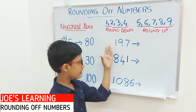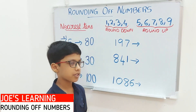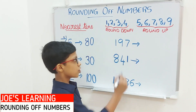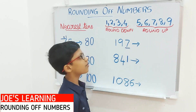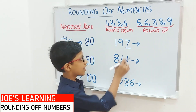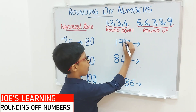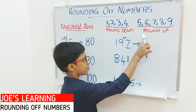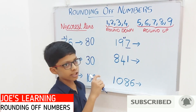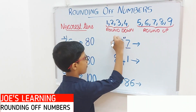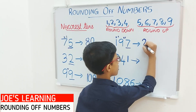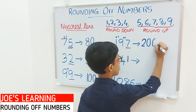Now let's try with three-digit and four-digit number examples. The first example is 197. We need to first look at the digit in the 1's place — 7 is in the 1's place. So we put a 0 in the 1's place and add 1 to the digit in the tens place. But if we add 1 to 9, that equals 10, so we need to carry over 1 to the digit in the hundreds place. So 197 rounded off to the nearest tens equals 200.